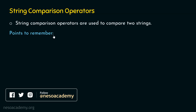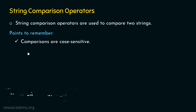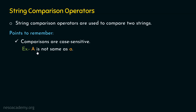The following are the points you need to remember. The first point is: comparisons are case sensitive in Python. For example, capital A is not the same as small a. By comparisons, I mean the operands of the comparison operator. So if we want to compare capital A and small a, we need to know that capital A is not the same as small a, because comparisons are case sensitive.